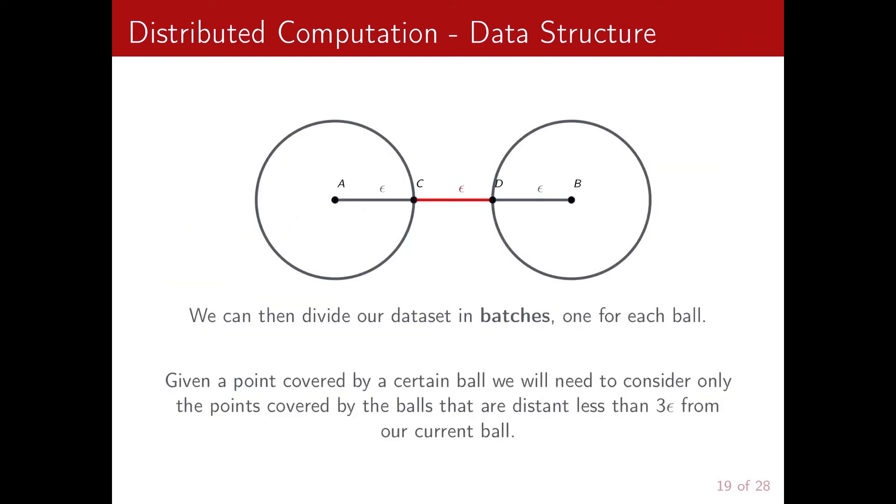So this data structure has two main advantages. The first one is that when constructing a Vietoris-Rips complex for a point covered by a certain ball, we will need only to consider the points covered by the balls that are distant less than 3 epsilon from our current ball. As explained in the picture, the limit case for a point in a ball that can be an epsilon neighbor of a point in a second ball is that the two centers are at distance less than 3 epsilon.